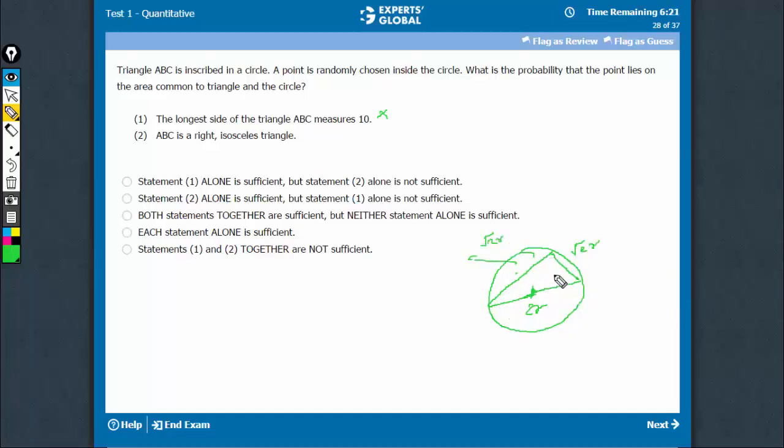So we know the area of this triangle. It's half into root 2R into root 2R, and we know the area of the circle, that is πR². So the probability of a point being in this common area is the area of the triangle divided by the area of the circle.